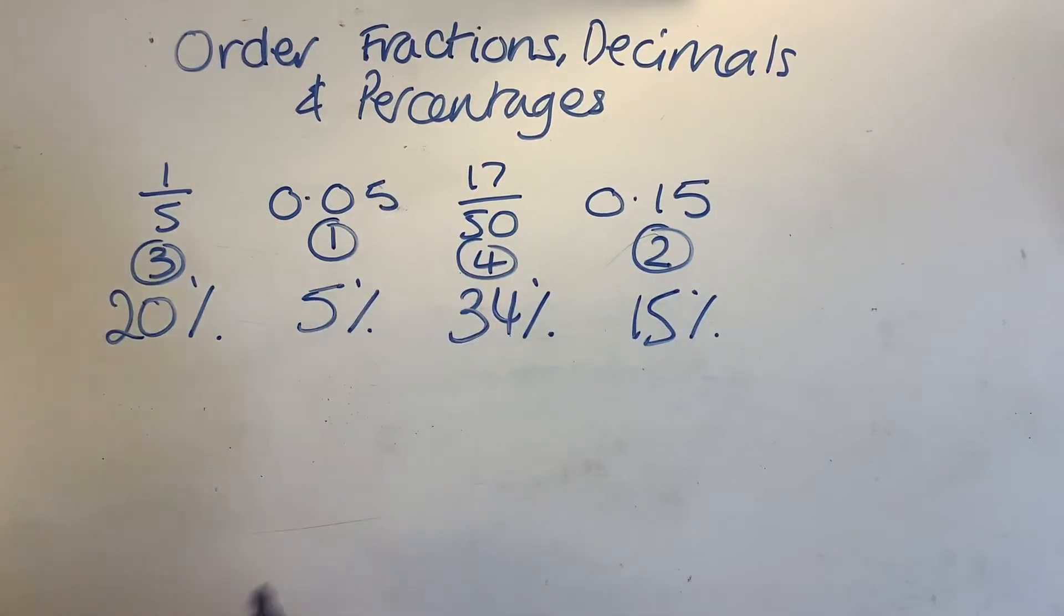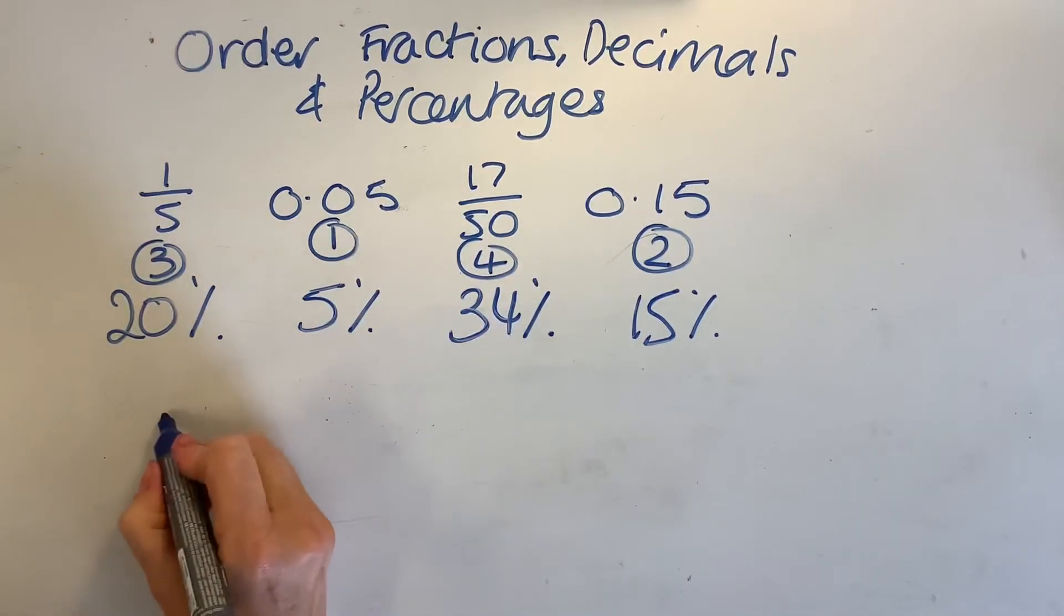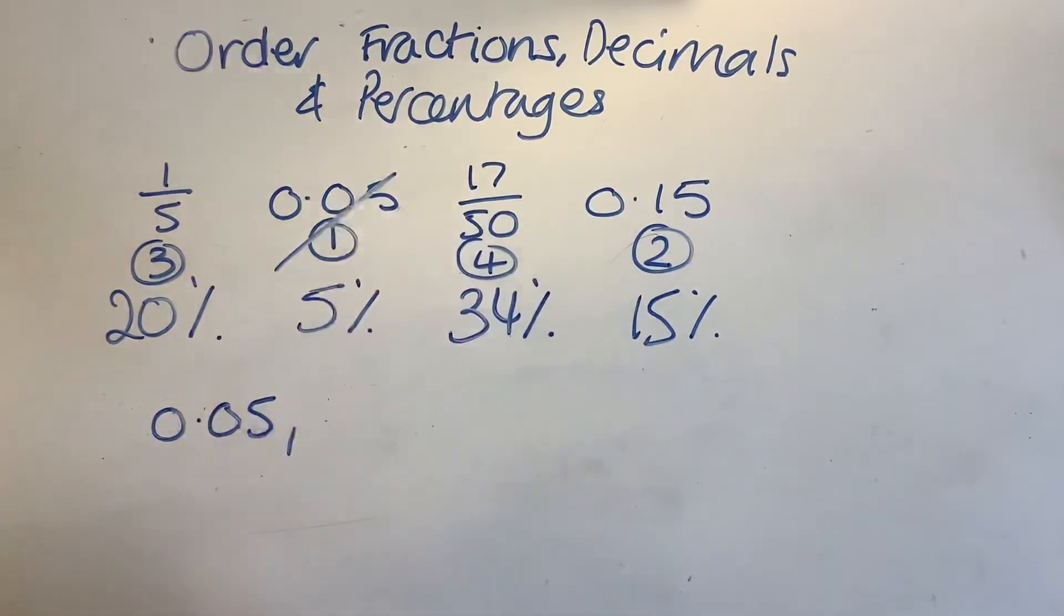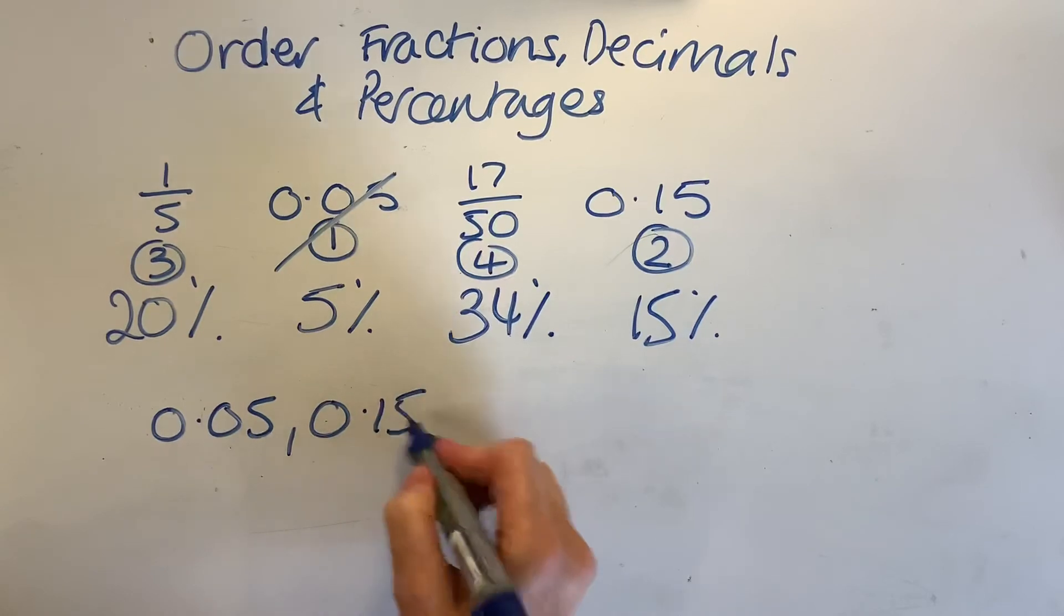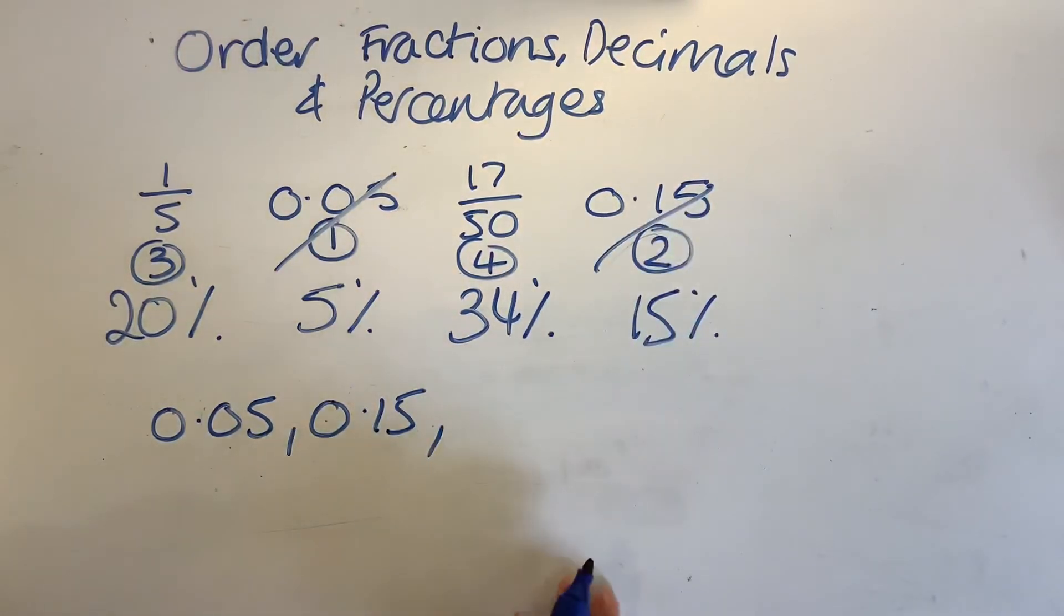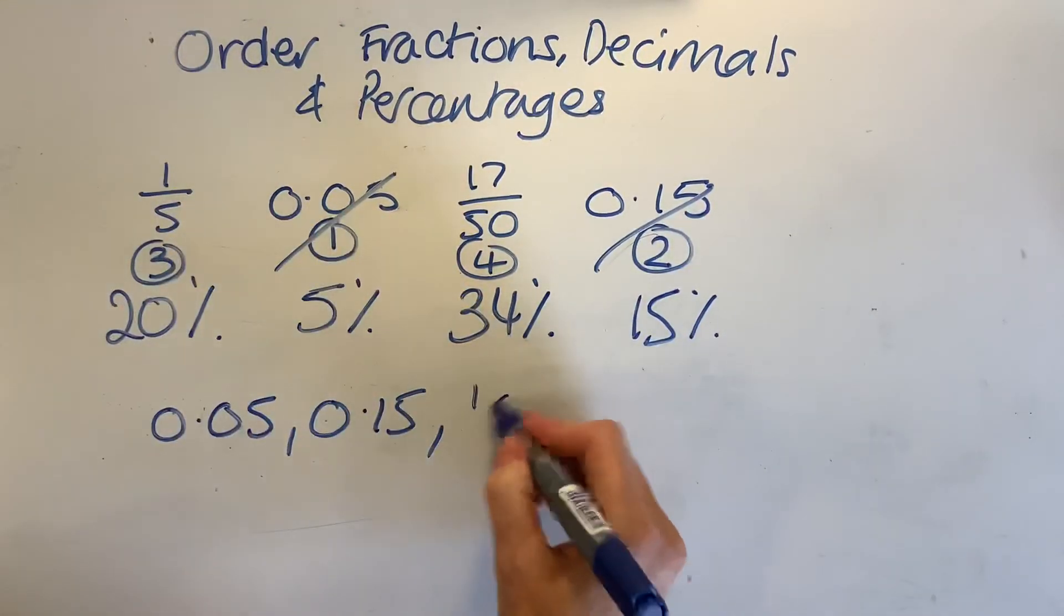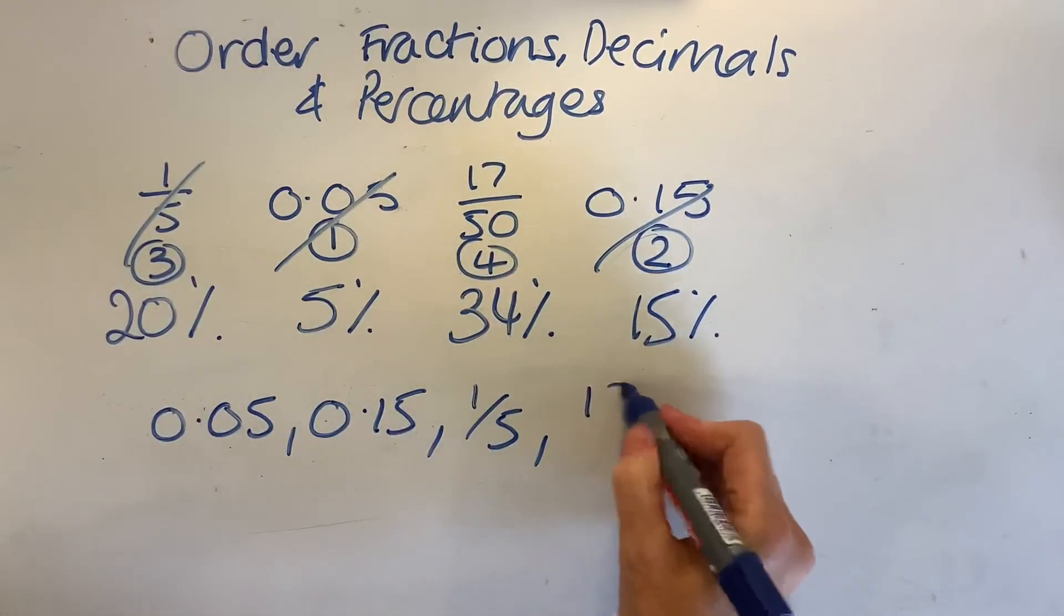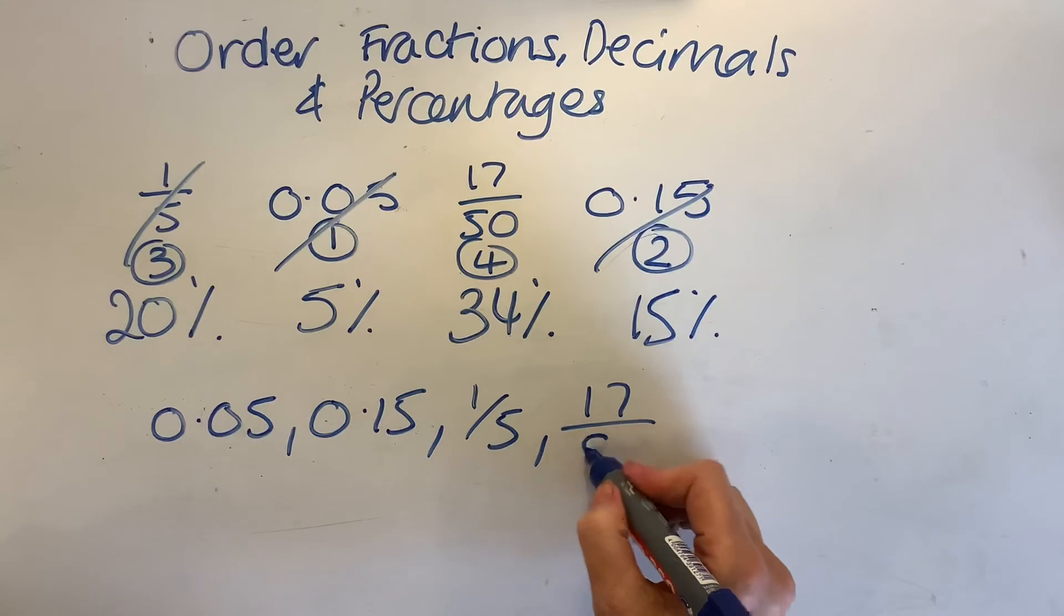So I can see that the smallest one that I've got here is 0.05. So I'm going to cross that one out because I know that I've done it. My next one is 0.15. Cross that out. Number three is a fifth. And the final one, 17 over 50. That's right, isn't it?